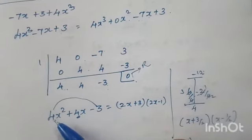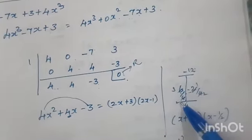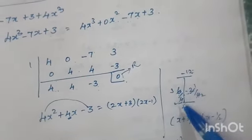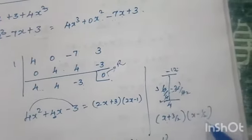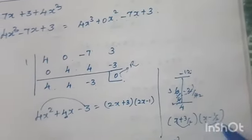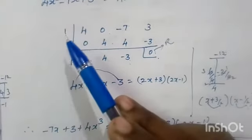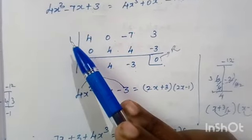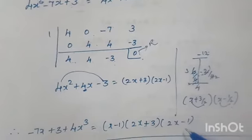To factor 4x² plus 4x minus 3: multiply 4 by minus 3 to get minus 12, find factors of minus 12 adding to 4 — that is 6 and minus 2. Divide by 4: 6 by 4 simplifies to 3 by 2, and 2 by 4 simplifies to 1 by 2. So factors are 2x plus 3 and 2x minus 1. Since we used number 1, the factor is x minus 1. Final three factors: x minus 1, 2x plus 3, and 2x minus 1.